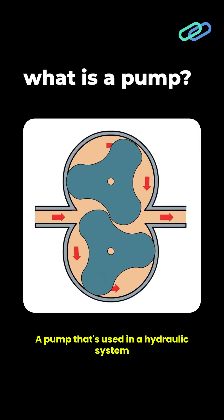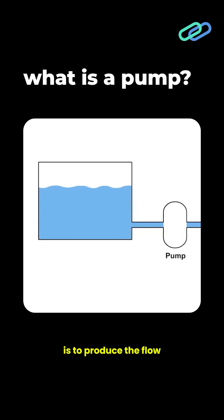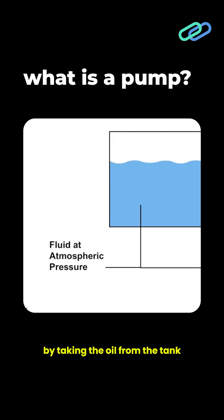A pump is used in a hydraulic system to convert mechanical power into hydraulic energy. The main purpose of a pump is to produce the flow by taking the oil from the tank and delivering it to the rest of the system.